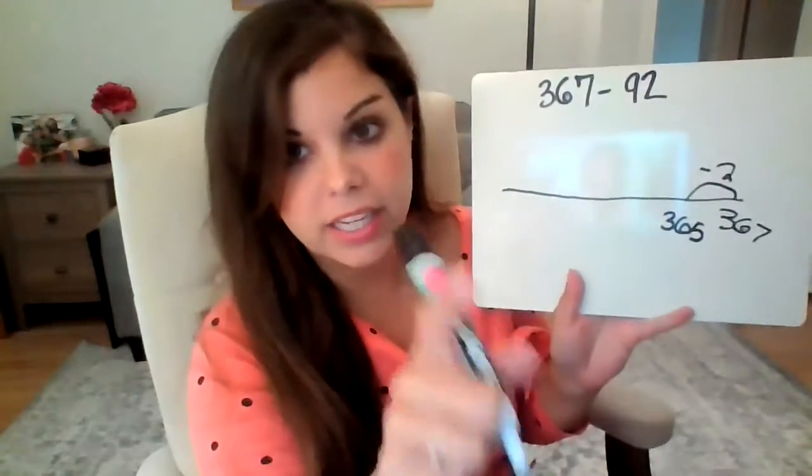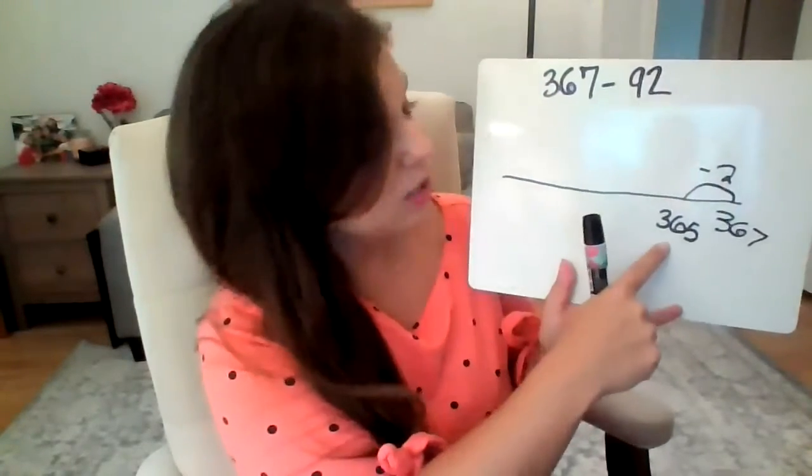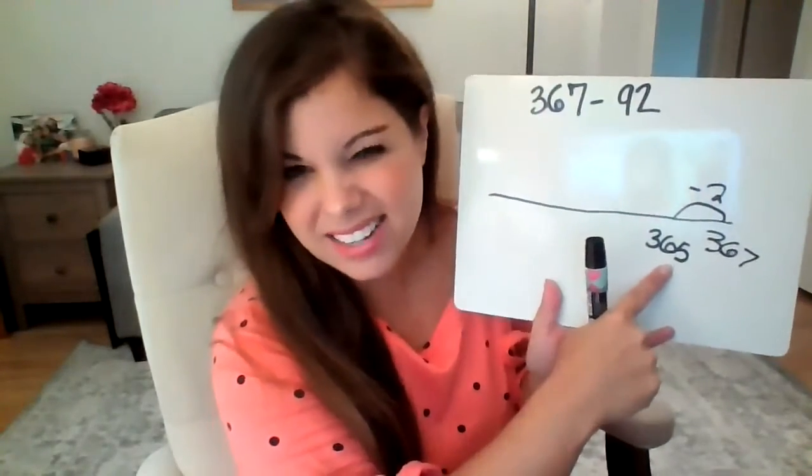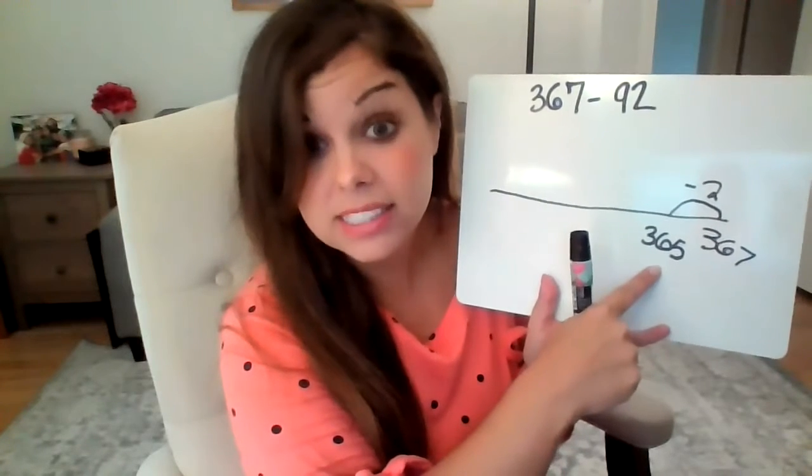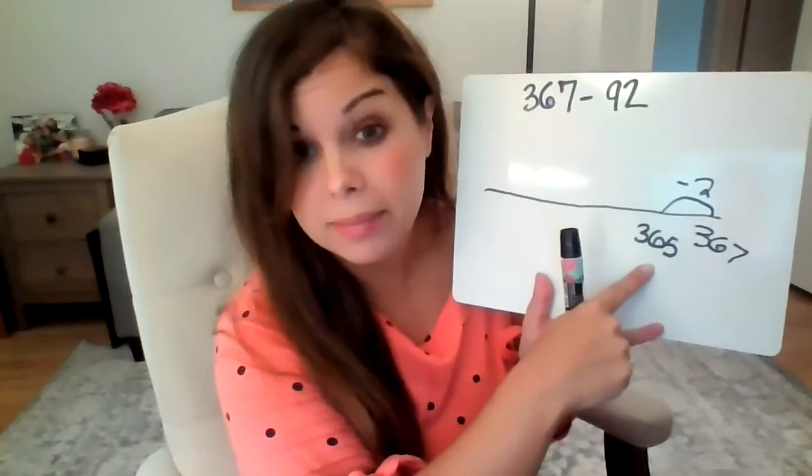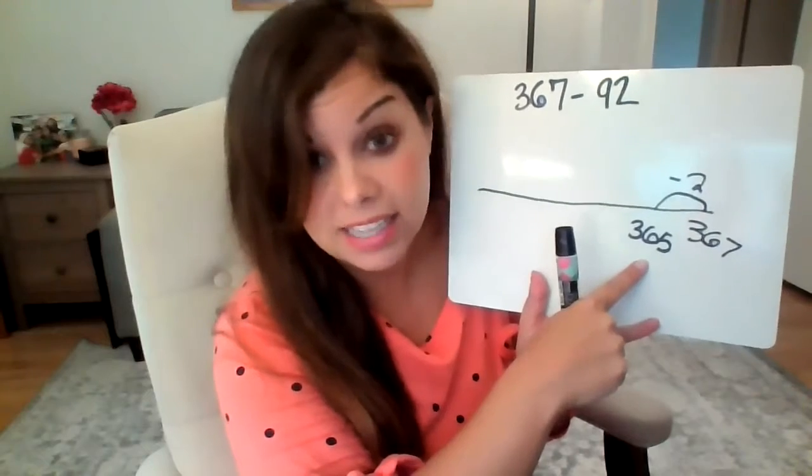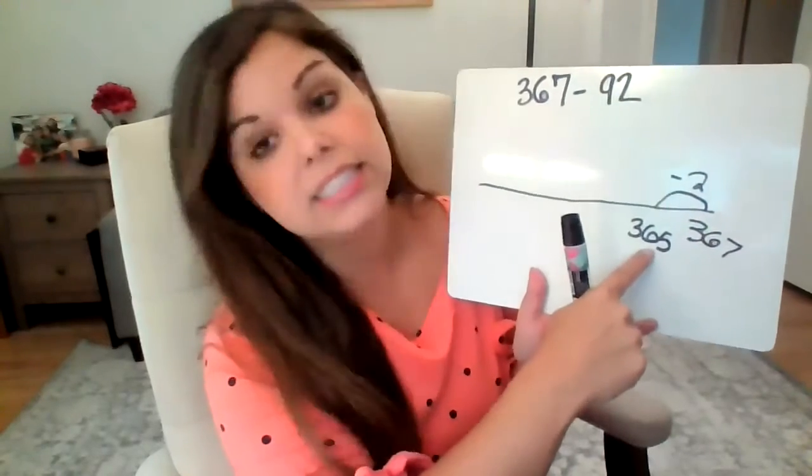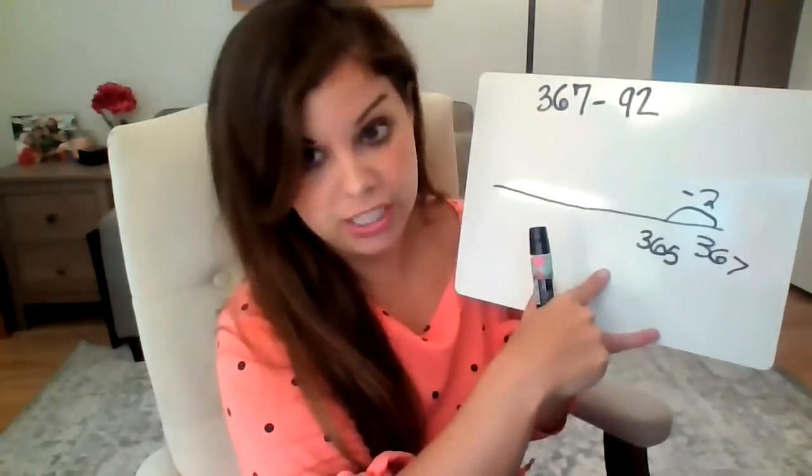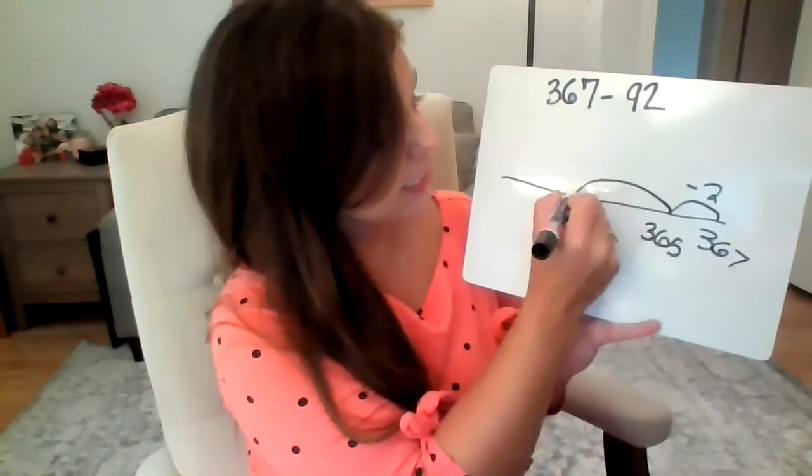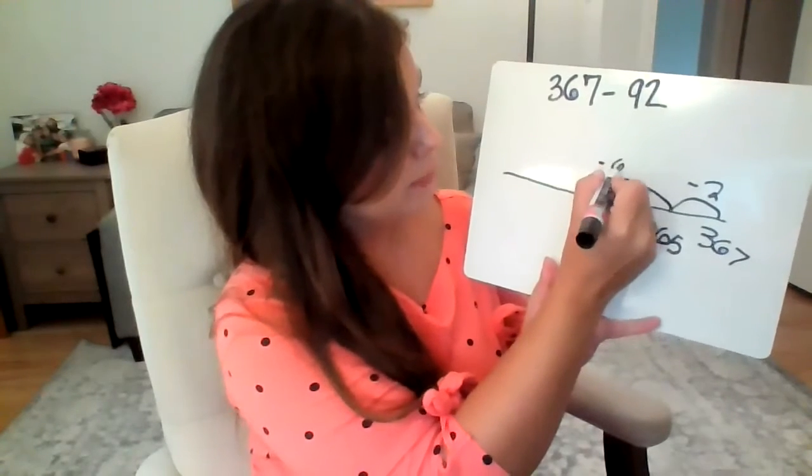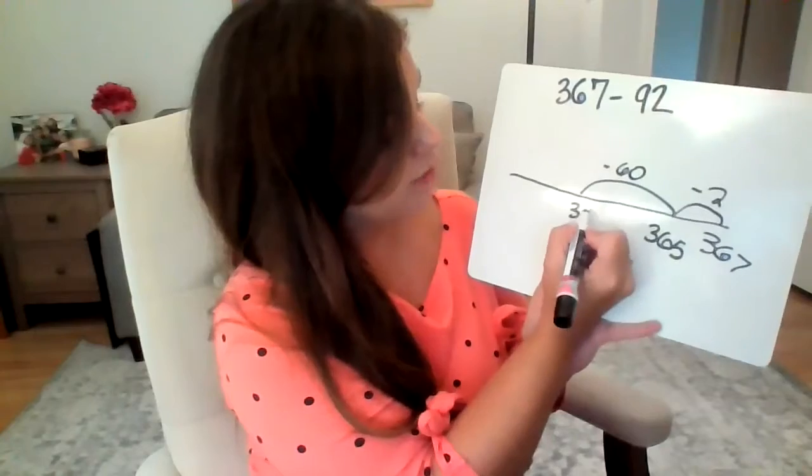Here's where it gets a little bit tricky though. If I try to take away 90 in my head, 90 is bigger than 60. So instead, what I'm going to do is decompose 90 into 60 and also 30. So I'm going to first take away 60, and now I'm at 305.